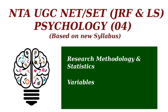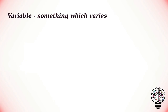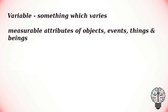Welcome to the psychology lecture series. In this video we are going to talk about variables. A variable, as the name implies, is something which varies. It is defined as those attributes of objects, events, things, and beings which can be measured.